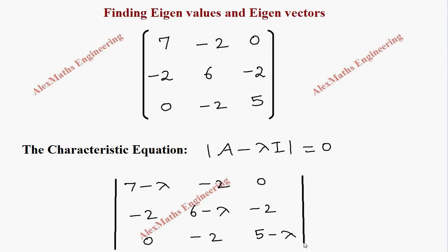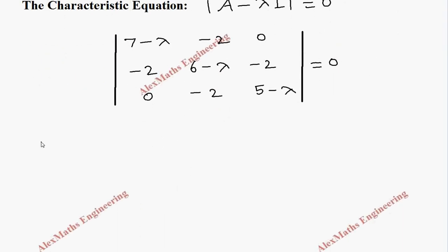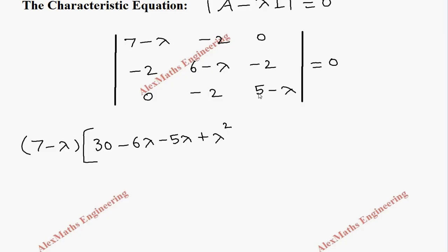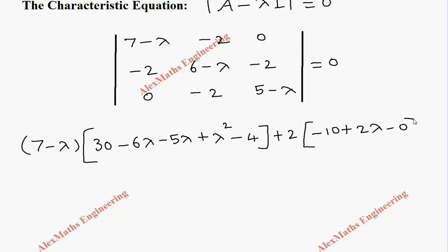We have to put this in the determinant and set it equal to 0. Now we are going to expand this. We take the first element 7 minus lambda and expand: 30 minus 6 lambda minus 5 lambda plus lambda squared, plus 4. Then we take the second element with minus sign — it is minus 2, which becomes plus 2 — and multiply: minus 10 plus 2 lambda, and the last element is 0.